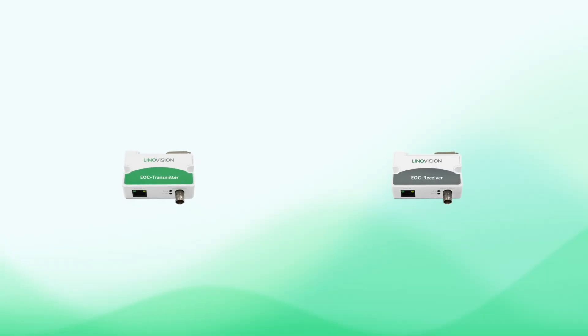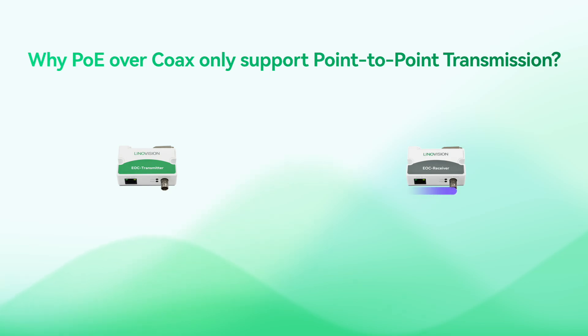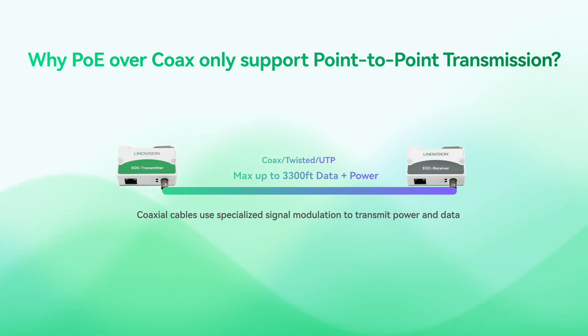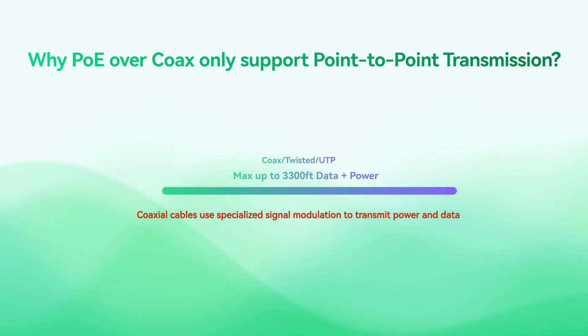You wonder why? Very quick review. POUR Coax is limited to point-to-point connections due to key technical challenges. Coaxial cable uses specialized signal modulation to transmit power and data, which standard POE splitters or repeaters cannot process. Additionally, these systems rely on paired transceivers for compatibility, and intermediate devices can disrupt the signal integrity. But what if I told you there's a way to go beyond these limitations?